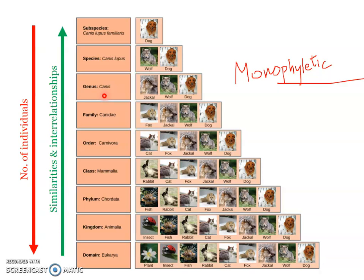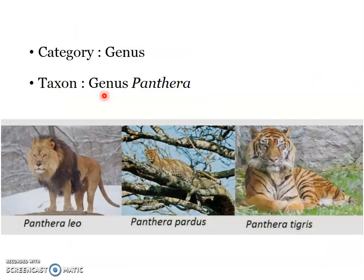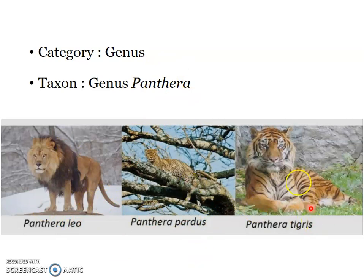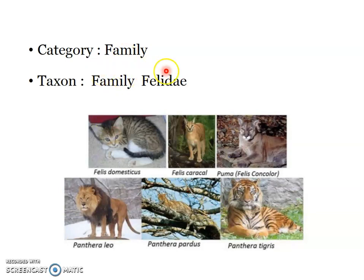A taxon is the name of a group of similar or related organisms, while a category is the rank of the taxon in the hierarchical classification. For example, the category is genus, the taxon is genus Panthera, and this genus Panthera includes more than one species: Panthera leo, Panthera pardus, and Panthera tigris.